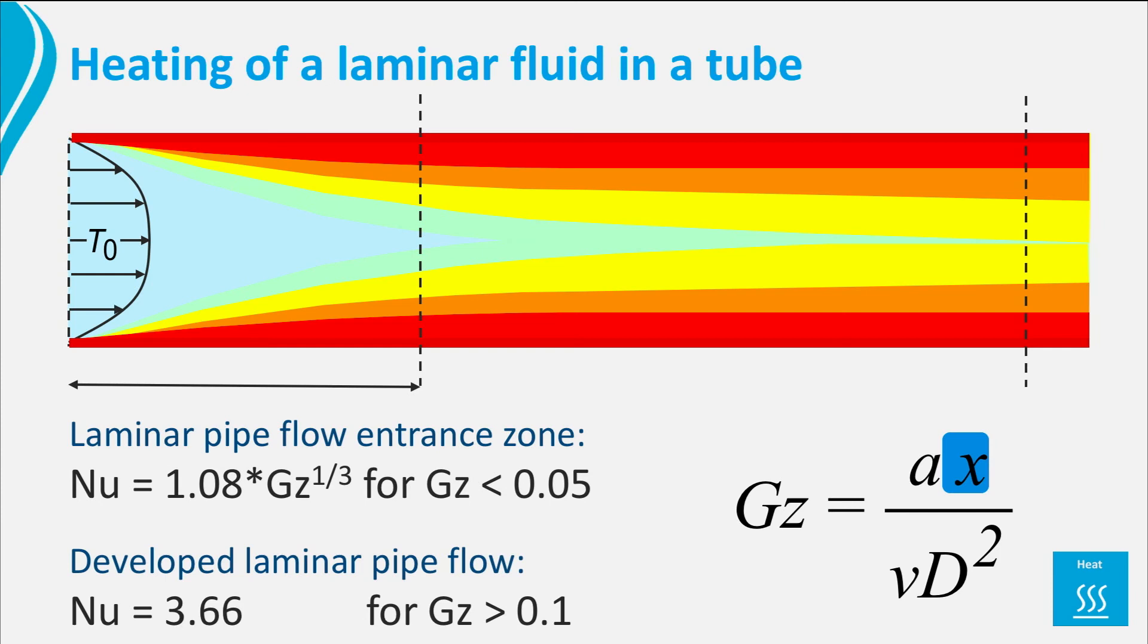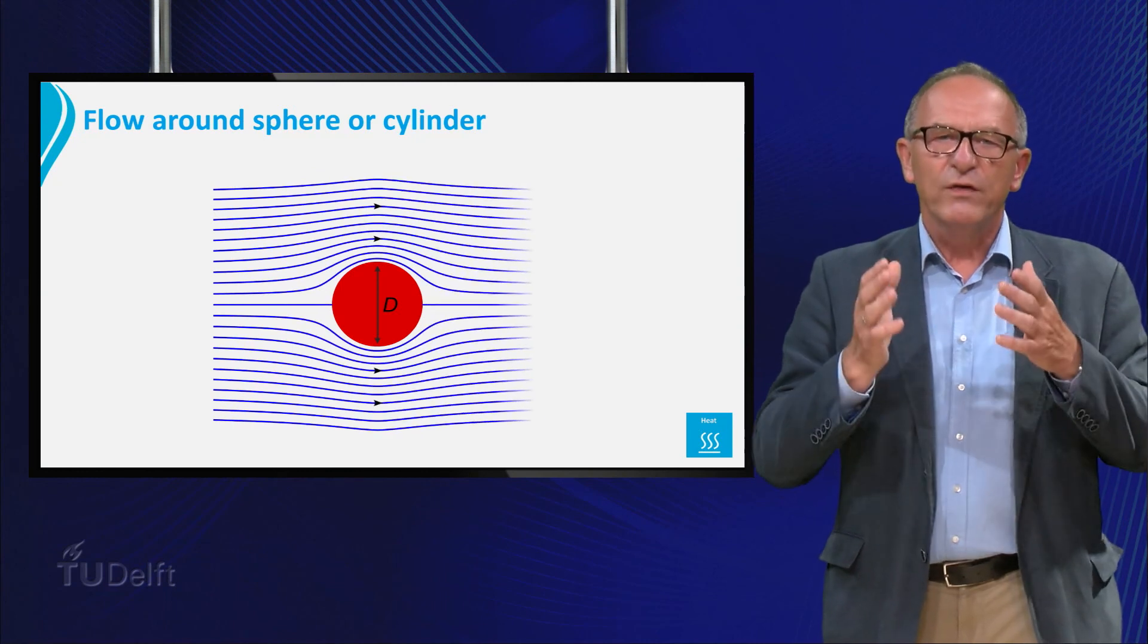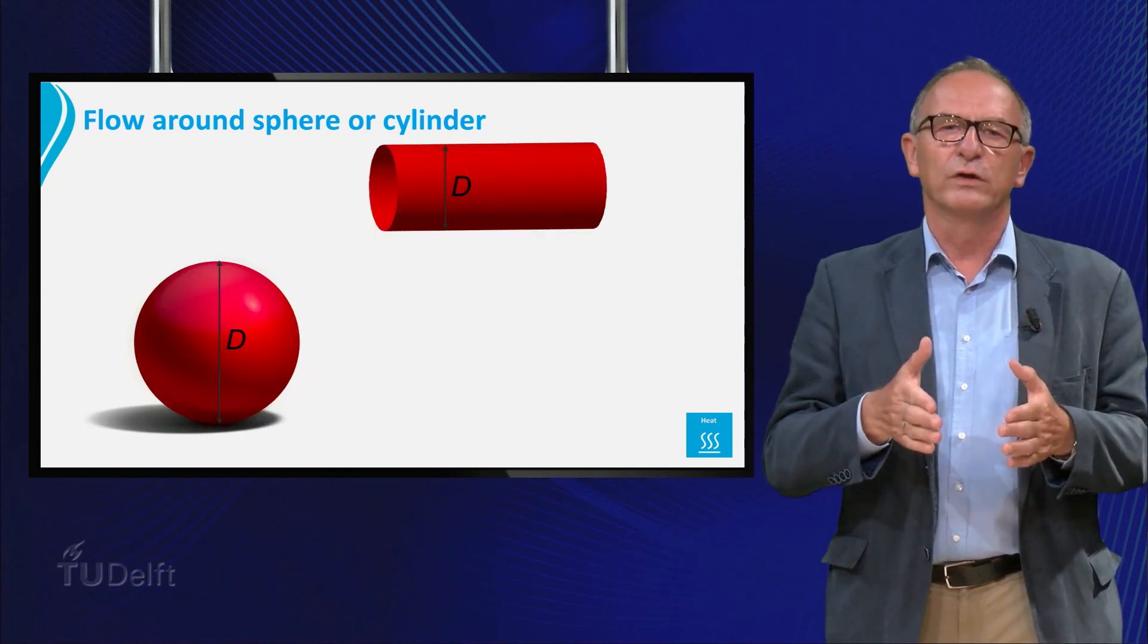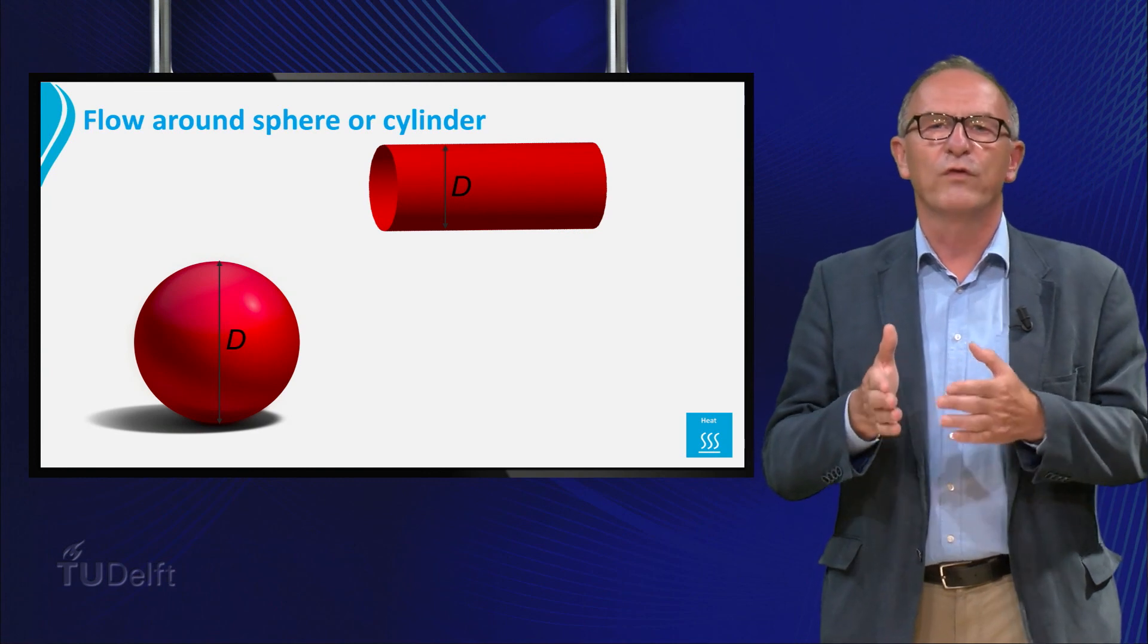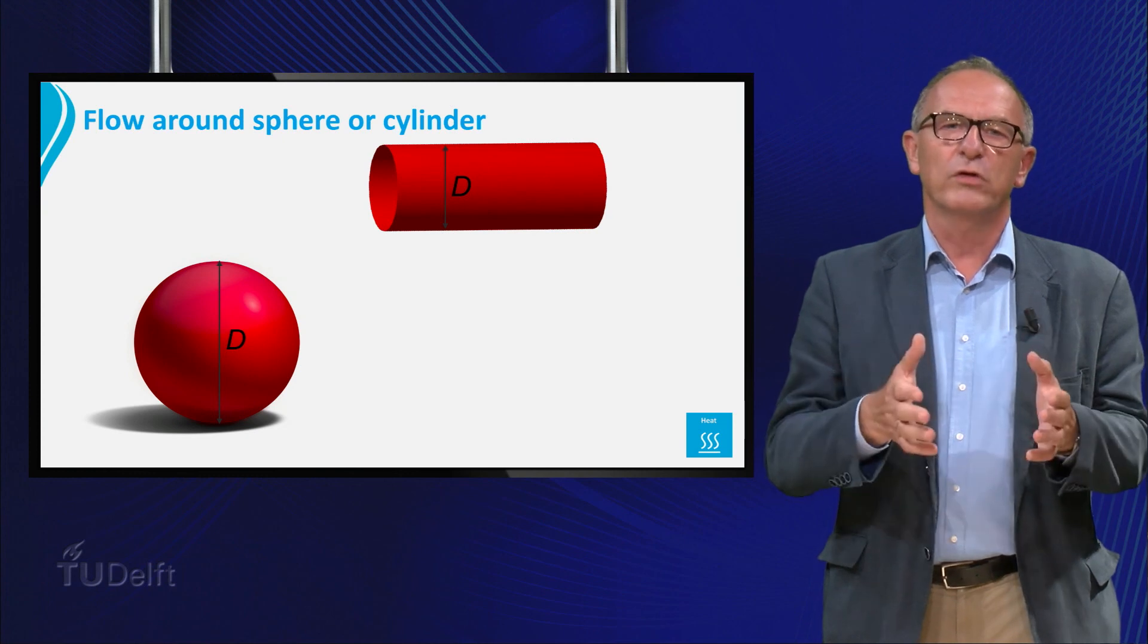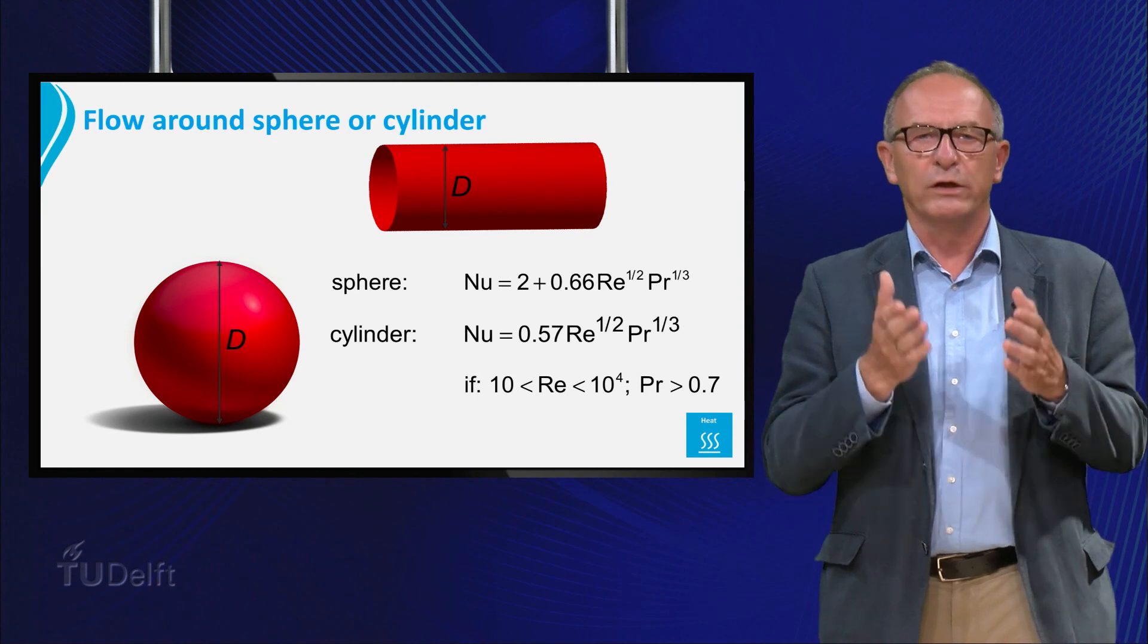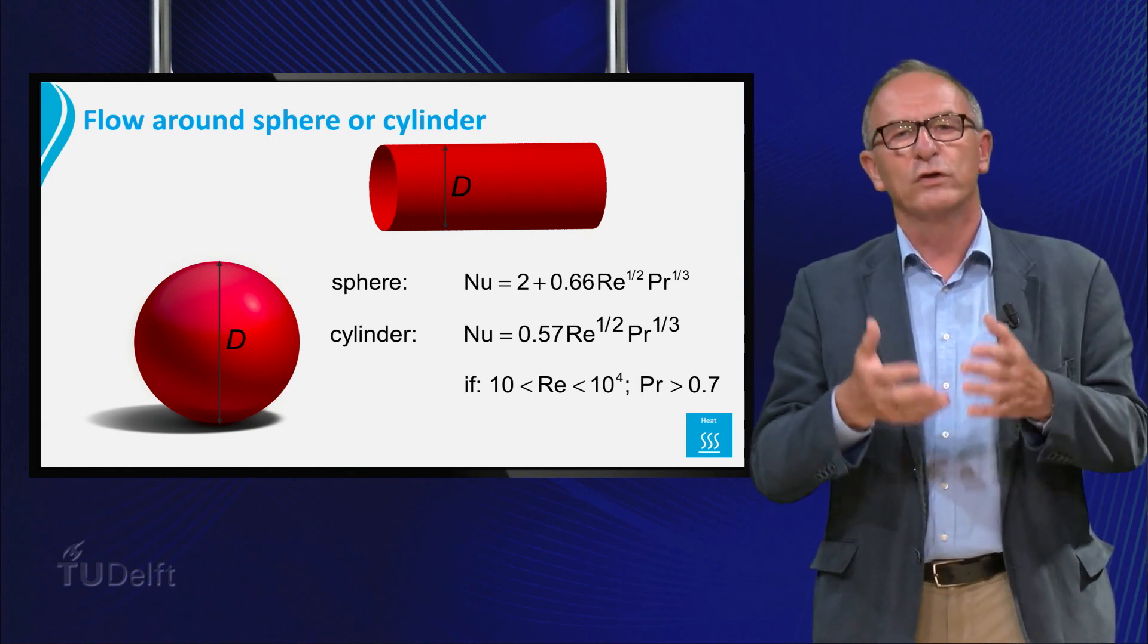We have now seen that heat transfer by forced convection strongly depends on the fact if a flow is laminar or turbulent. We have only shown here the example heat transfer in a pipe, but in a similar way there are also Nusselt correlations for flow around other geometries like spherical particles or cylinders. We have now seen that the approach to calculate the heat flux or heat flow during forced convection is in all cases the same. Depending on the geometry you choose a correlation to calculate the Nusselt number, subsequently you calculate the corresponding heat transfer coefficient and finally the heat flux or heat flow.